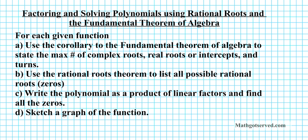So the instructions for each problem we're going to consider today are as follows. We have to use the fundamental theorem of algebra to state the maximum number of complex roots, real roots or intercepts, and turns for the graph of the function. Then we're going to use the rational roots theorem to list all the possible rational roots or zeros. In part C, write the polynomial as a product of linear factors and find all the zeros. And then in part D, we're going to sketch a graph of the function.